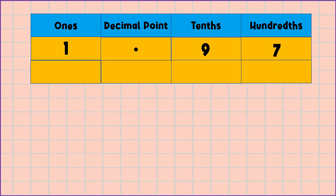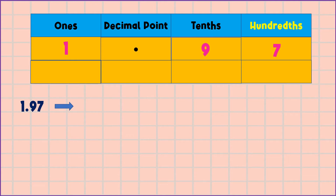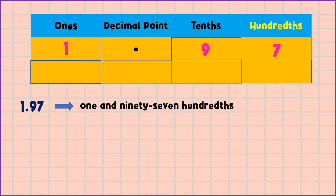How do we read this number? We have here a whole number and a decimal number. In reading this number, we're going to read from left to right. The decimal point we read as 'and.' So this is one and ninety-seven, then we're going to say the place value of the last digit, which is hundredths.